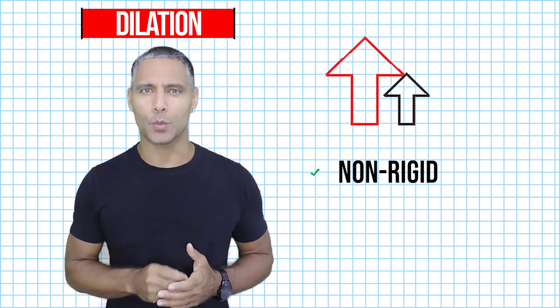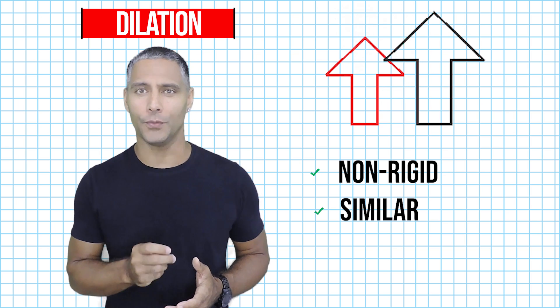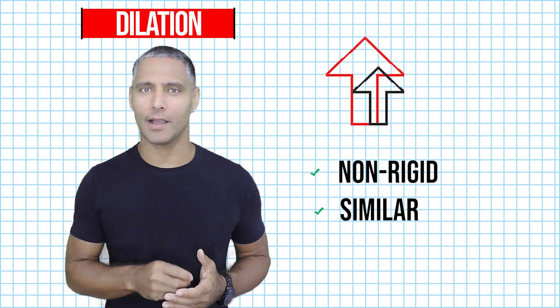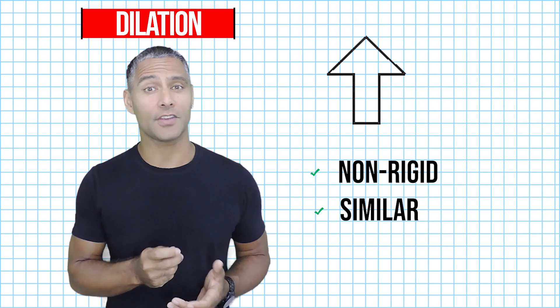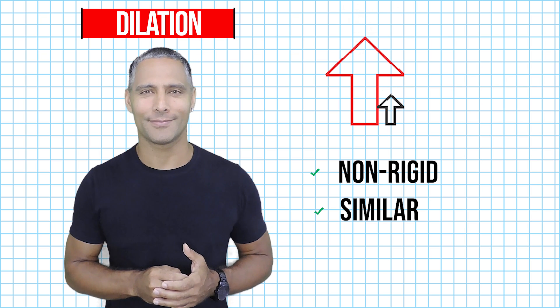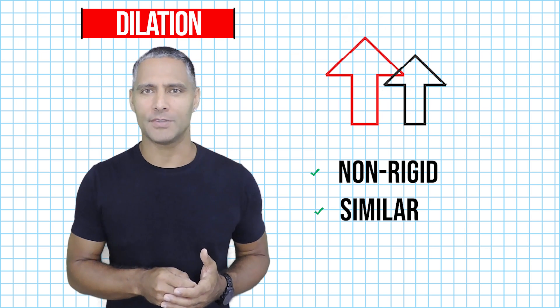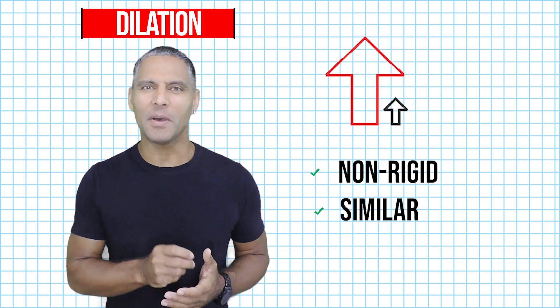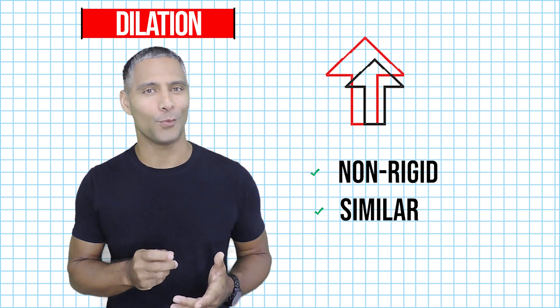In fact, dilated objects will always be similar to their original forms. Now remember, similarity is a mathematical concept which just means that objects are proportional to each other. So if one side of our object became one-half as large, all other sides of that object must be scaled down by a factor of one-half.